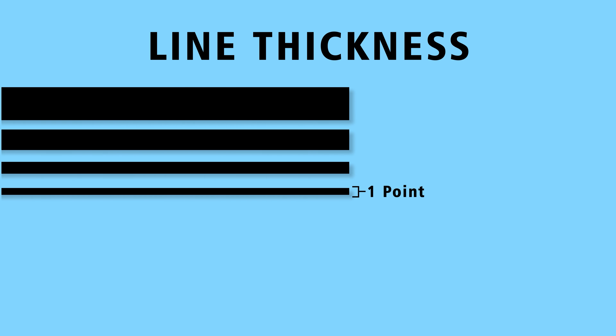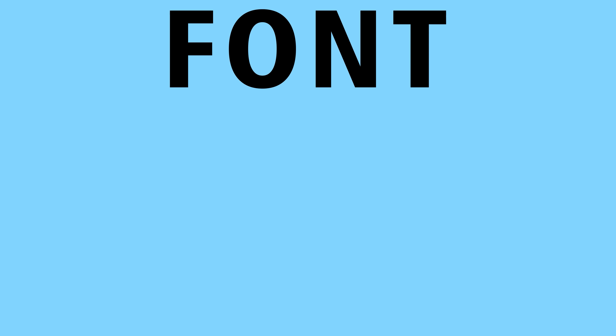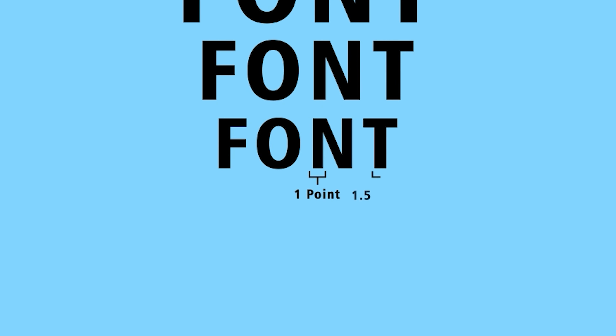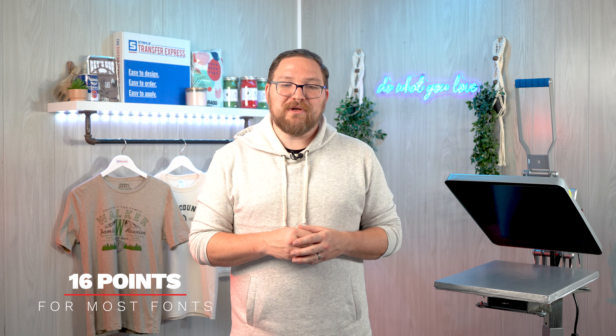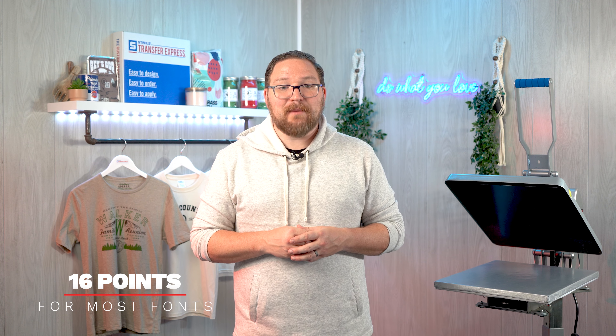We are working with liquid-based ink with our screen prints after all. Now, general industry minimums for screen printing are one point for line thickness, and this applies to font sizing too, with the stem or line of each character no thinner than one point. That's right around 16 points with most fonts when you're printing on fabric.